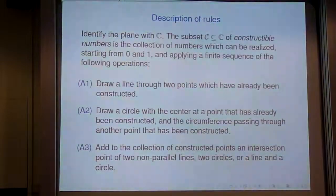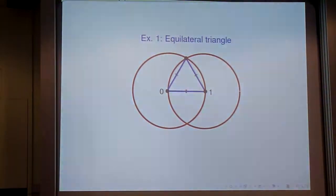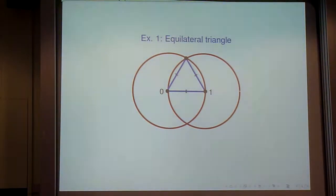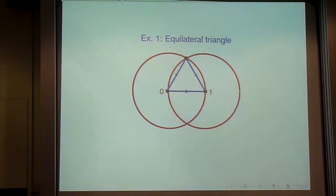I might also talk about constructible angles or constructible shapes — an angle is when two lines intersect each other. Just to make sure everybody understands the rules, let's talk about how to construct an equilateral triangle. If you take the points 0 and 1, draw the circle centered at 0 passing through 1, and the circle centered at 1 passing through 0, their intersection points give you an equilateral triangle, since each side is a radius of a circle of radius 1.